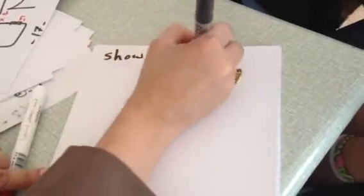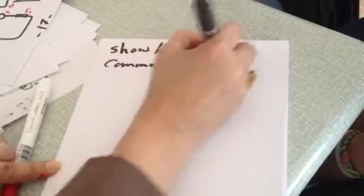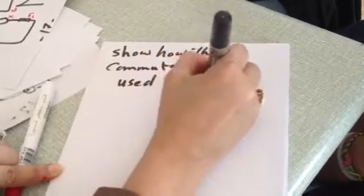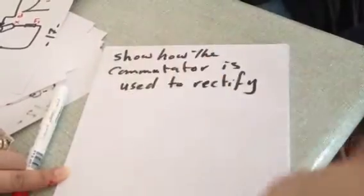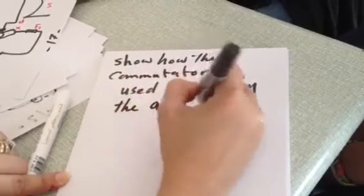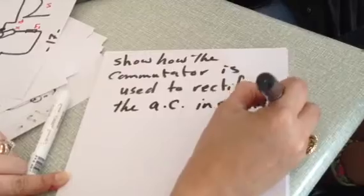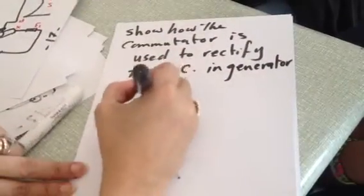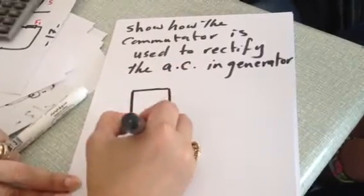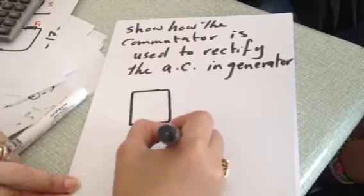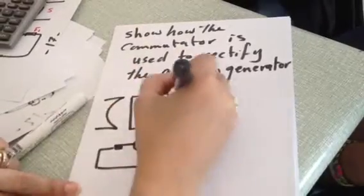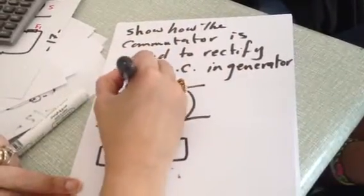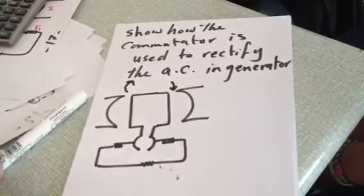Okay, so from A to B to C to D, right? From A to B to C to D to X to F1 to F2. Okay? Okay. We'll do it like this. 18, show how the commutator is used to rectify, to rectify, meaning to make it unidirectional. Okay? Rectification.